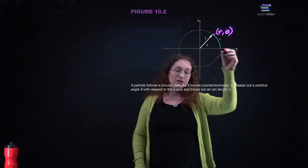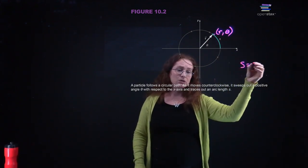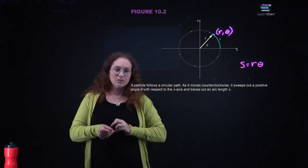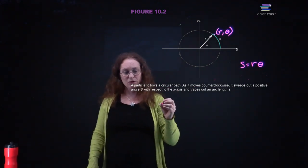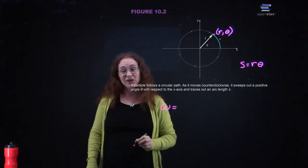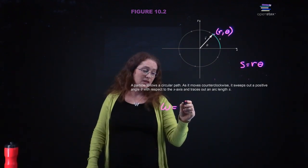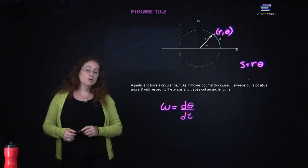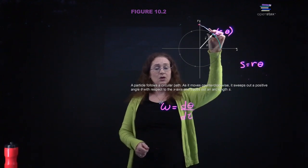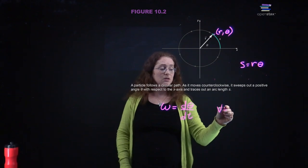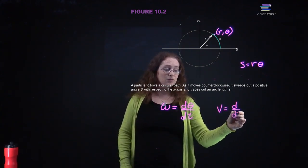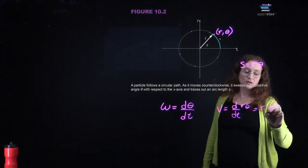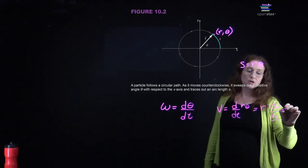Arc length can be related to theta. The arc length s is equal to the distance from the origin times theta. Then we use a bit more terminology: omega is the angular speed, and this is d theta/dt. The radial speed is equal to the time derivative of the arc length. For a fixed radius, this is r times d theta/dt, or r times omega.